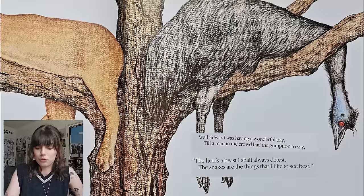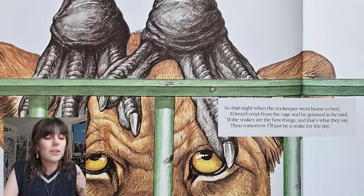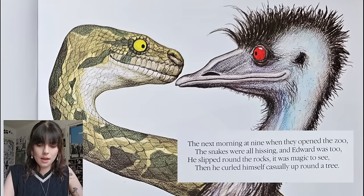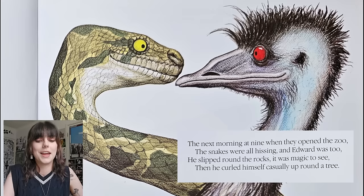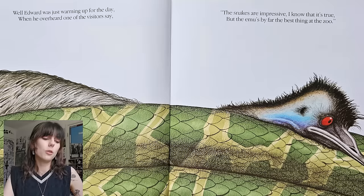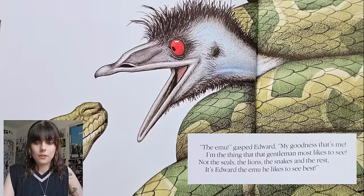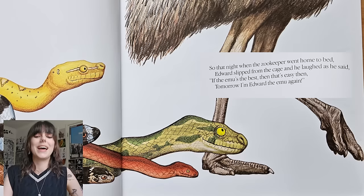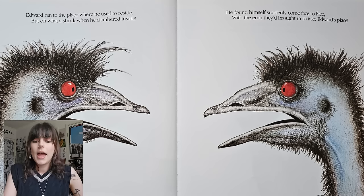Well Edward was having a wonderful day till a man in the crowd had the gumption to say the lion's a beast I shall always detest, the snakes are the things that I like to see best. So that night when the zookeeper went home to bed, Edward crept from the cage and he grinned as he said if the snakes are the best things and that's what they say, then tomorrow I'll just be a snake for the day. The next morning at nine when they opened the zoo, the snakes were all hissing and Edward was too. He slipped around the rocks, it was magic to see, then he curled himself casually up around a tree. While Edward was just warming up for the day, when he overheard one of the visitors say the snakes are impressive I know that it's true, but the emu's by far the best thing at the zoo. So that night when the zookeeper went home to bed, Edward slipped from the cage and he laughed as he said if the emu's the best then that's easy, then tomorrow I'm Edward the emu again.